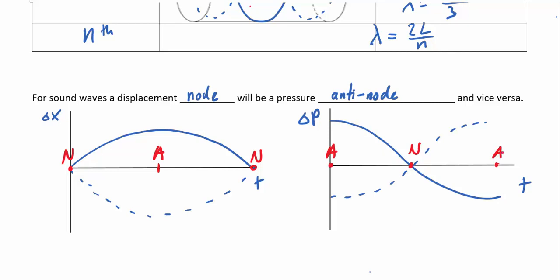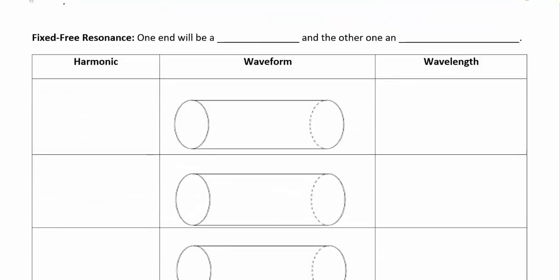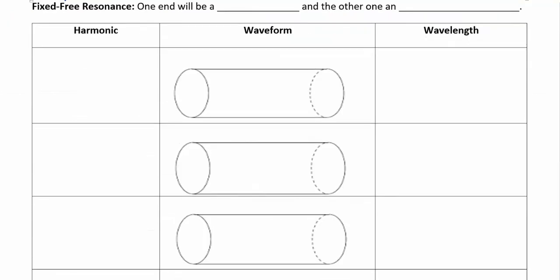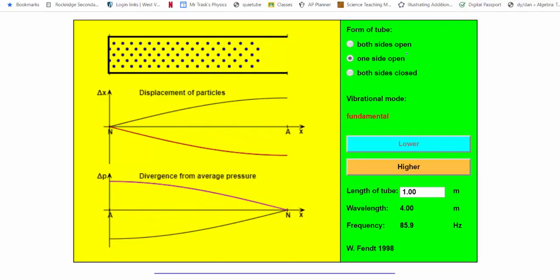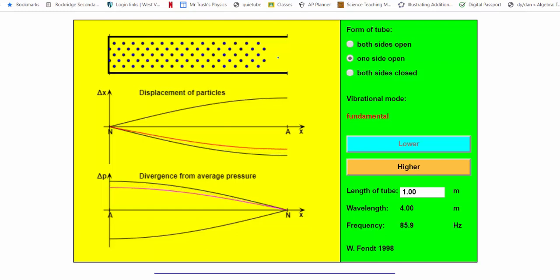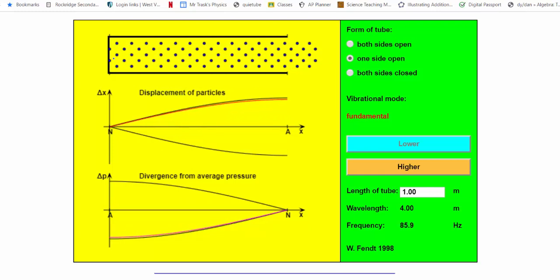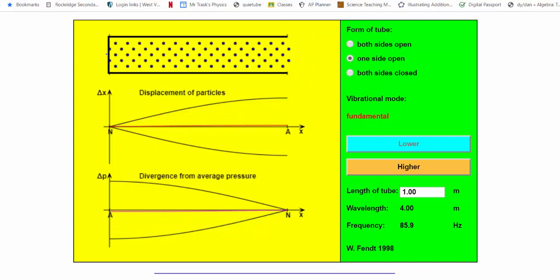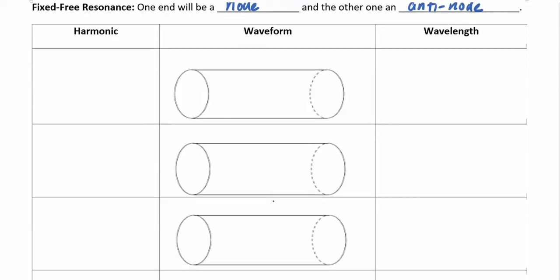Now we'll look at a fixed-free resonance tube, where one end is a node but the other end is an antinode. This is similar to what we did in class with the graduated cylinders. At the open end, air molecules can move quite a bit, while at the closed end they can't move much at all — so we get a node at the closed end and an antinode at the open end.